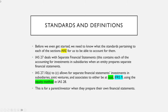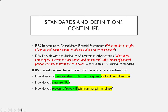IAS 27 applies for a parent or investor when they prepare their own financial statements. IFRS 10 is the consolidated financial statement standard. So what are the principles of control? When is control established? And when do we consolidate? This is a discussion question mostly, and there will be somewhere in this video where I actually speak about how we do this discussion question.